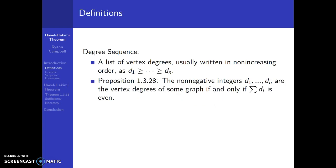Our definition of degree sequence is a list of vertex degrees, which we usually write in non-increasing order. So D1 has the maximum degree, then D2 is equal to or less than D1, and that pattern continues through Dn, which has the minimum degree. Proposition 1328 states that non-negative integers in a degree sequence are vertex degrees of a graph if and only if their sum is even, because the degree sum theorem requires the sum of degrees to equal 2 times the number of edges.